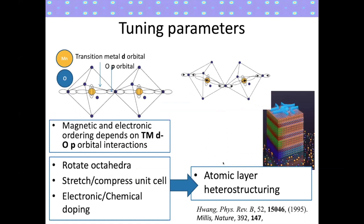In the case of lanthanum strontium manganites, there's a very strong coupling between the lattice structure and the magnetic and transport properties, due to a super exchange which takes place between the transition metal d-orbitals, the bridging oxygen p-orbitals, and the next neighboring transition metal d-orbitals. To tune the properties experimentally — bandwidth, hopping, and super exchange — we can distort the octahedra by causing them to rotate, or apply compressive or tensile strain to change the distances between oxygens and transition metal ions.